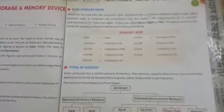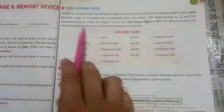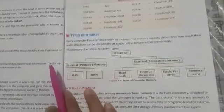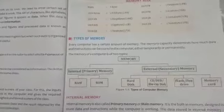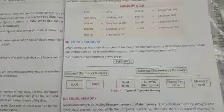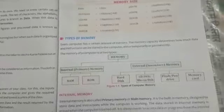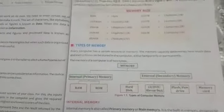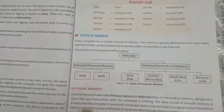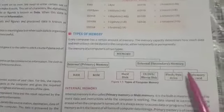Then third topic is types of memory. Basically, computer has two types of memory: one is internal memory and the second one is external memory. Internal memory which is initially built.